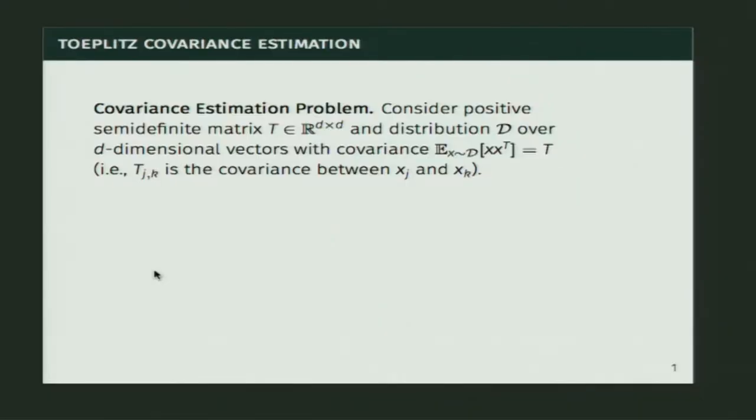In this work, we're studying the very classical problem of covariance estimation. I have a positive semi-definite matrix T — it's d by d and it's the covariance matrix of a d-dimensional distribution. I'm drawing d-dimensional vectors from this distribution. The expectation of xx-transpose is equal to the covariance matrix, which we're trying to learn from samples. Another way to think about it is t_{jk}, the jkth entry, is the covariance between the j and kth entries of those vectors.